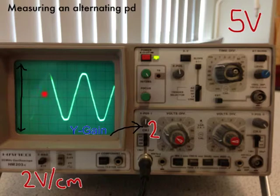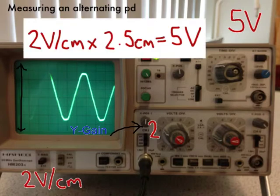And if we have a little look here, there's 1, 2, 2.5 and a bit-ish squares there. So, if each square is worth 2 volts, we can do a quick calculation there. 2 volts per centimetre times by 2.5 centimetres or 2.5 squares gives me a voltage of 5 volts. So, I've been able to read that oscilloscope trace.